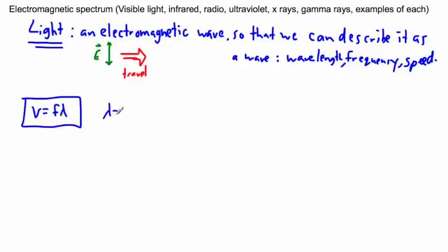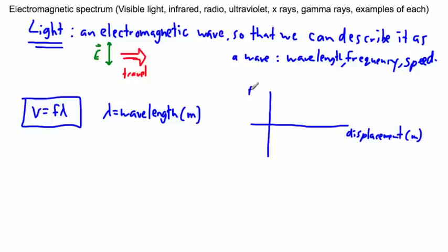Lambda is your wavelength, measured in meters. If I did a diagram of your wave, with displacement in meters versus position in meters, and the wave looks like this, then this distance from here to here is called the wavelength.